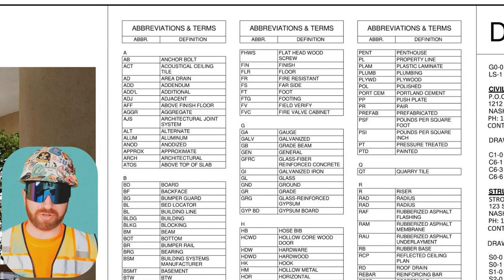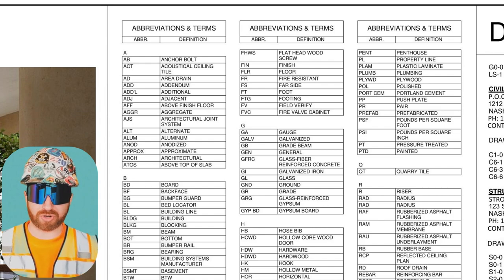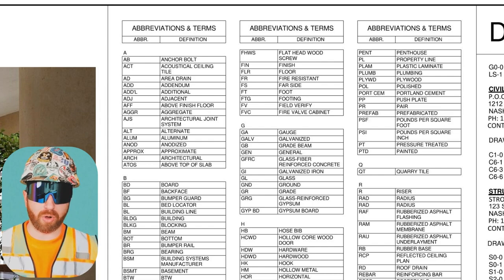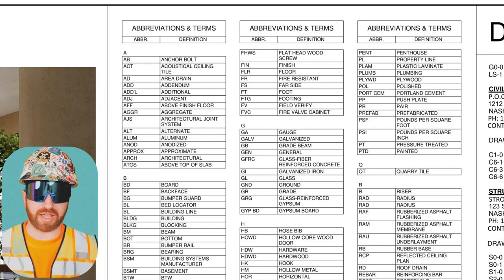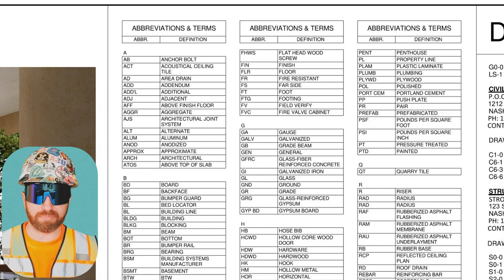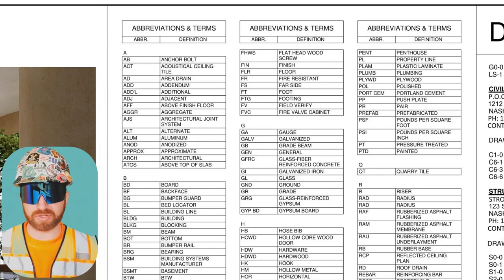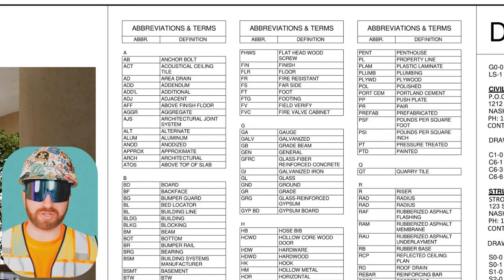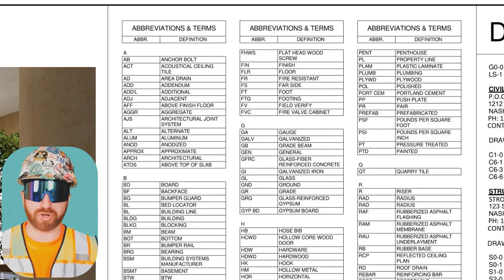Each other discipline — civil, structural, plumbing, mechanical, electrical — should also have their own cover or title page which should include their own set of abbreviations and symbols to reference within that discipline set. A lot of people get bogged down in the meanings of different symbols, so always reference back to these cover or title sheets to understand what the symbols and abbreviations mean. It'll just be a better guide for what you're actually looking at.